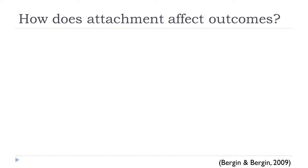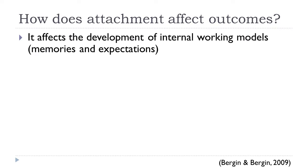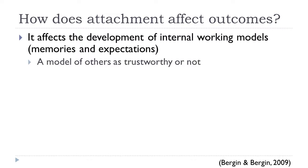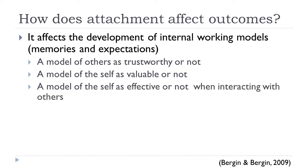How does attachment affect outcomes? Attachment affects the development of internal working models, such as memories and expectations. For example, people can have a model of others as trustworthy or not, a model of the self as valuable or not, and a model of the self as effective or not when interacting with others.